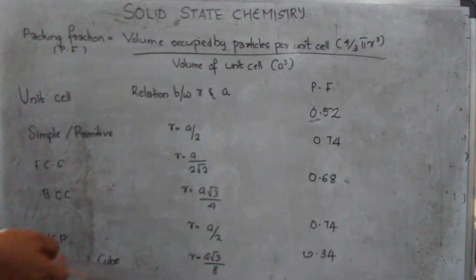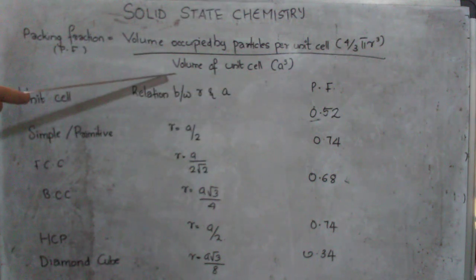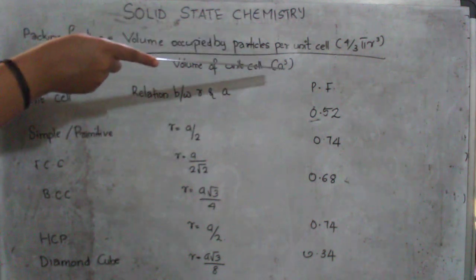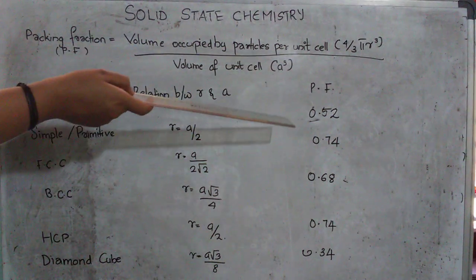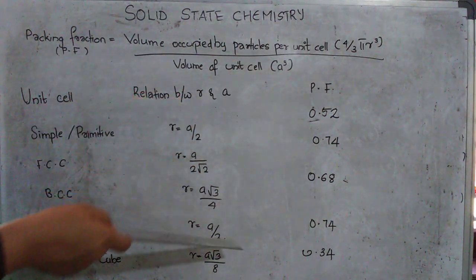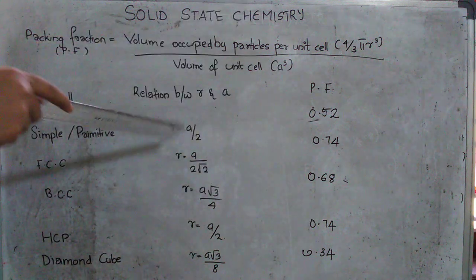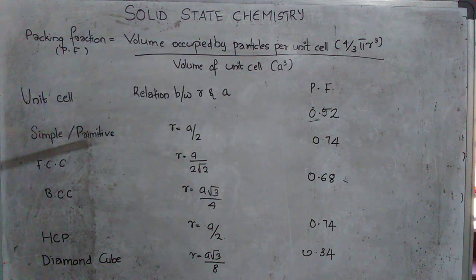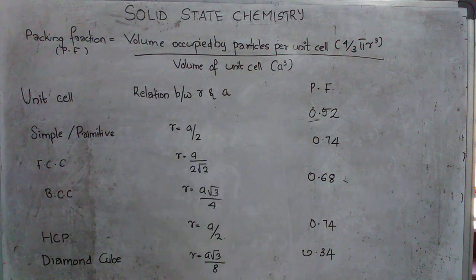Then you must not have heard much about this diamond cube unit cell but it is actually occupied by carbon, silicon, germanium etc. So it will be a root 3/8. Now the packing fraction, using this formula and this relationship between radius and a/2 and substituting it in 4/3 pi r cube and a cube, we will be getting packing fraction as 0.52. For simple, it is 0.52, FCC it is 0.74, BCC it is 0.68, then HCP it is 0.74 and diamond cube it will be 0.34.